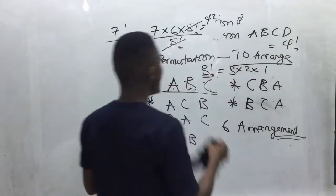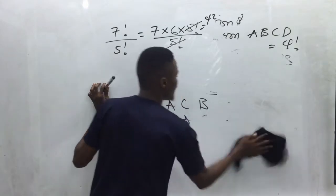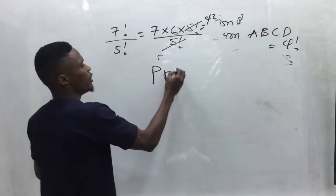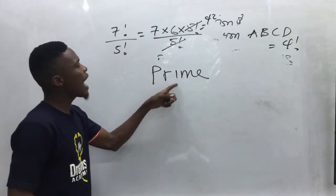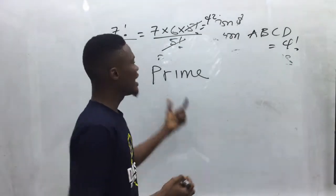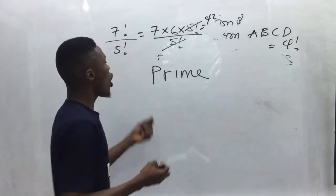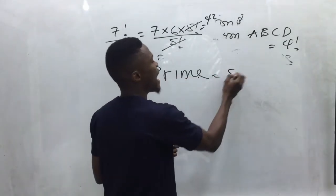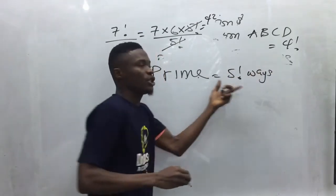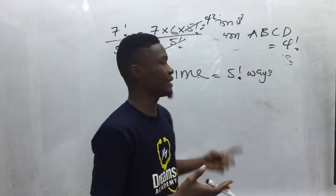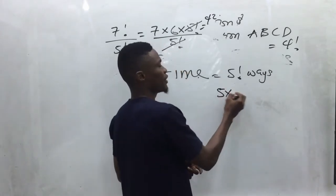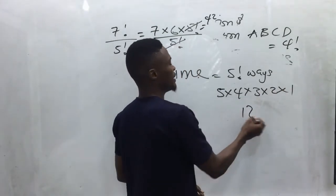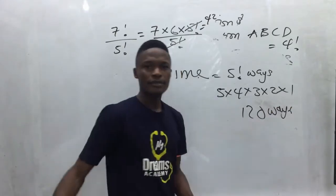Let's take the word PRIME: P, R, I, M, E. In how many ways can its letters be arranged? Count the letters — one, two, three, four, five — so five factorial ways. Five times four times three times two times one equals 120 ways.